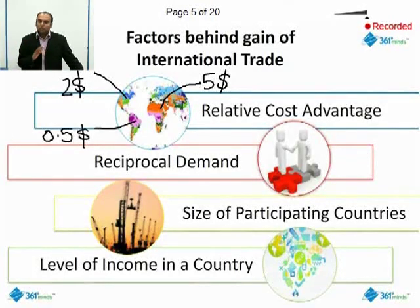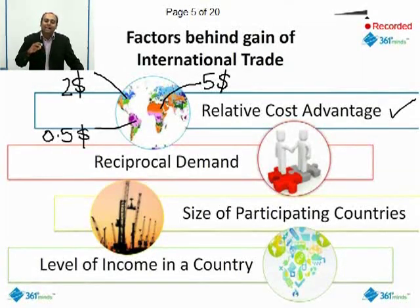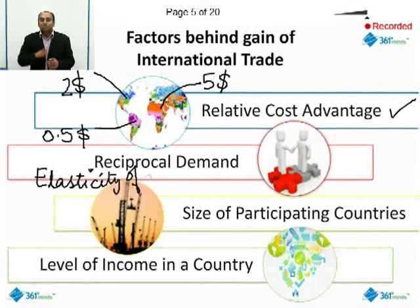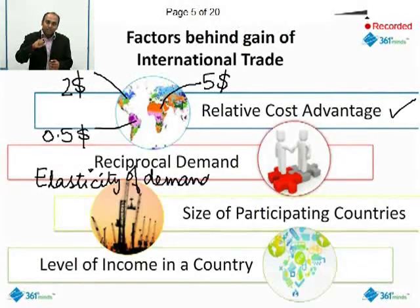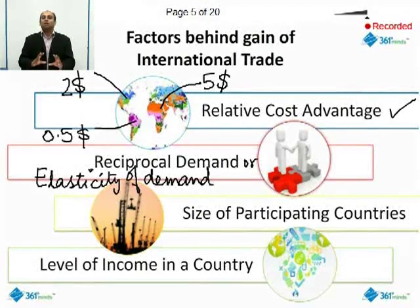Another reason for international trade to gain prominence is reciprocal demand, or what is called the elasticity of demand for various products. We understand that countries engage in international trade to gain and improve upon efficiency. The extent to which international trade takes place between two countries is dependent on the kinds of products they are able to export and import.